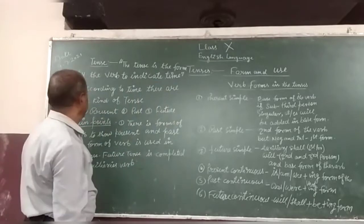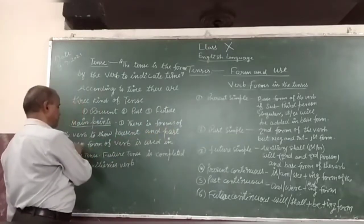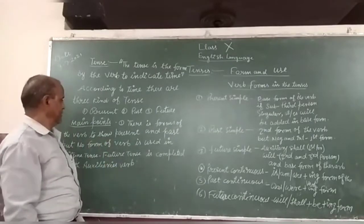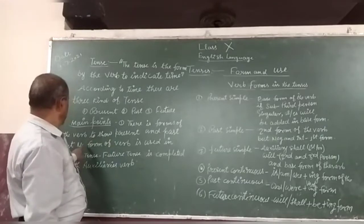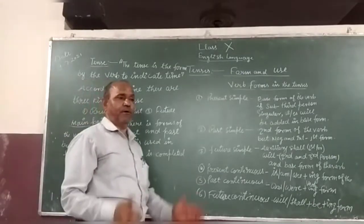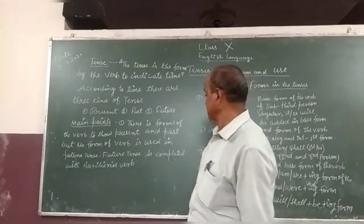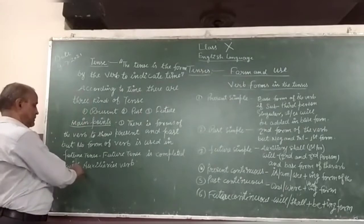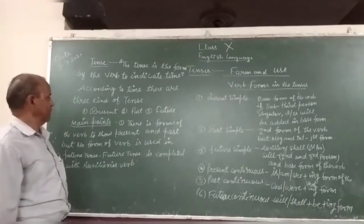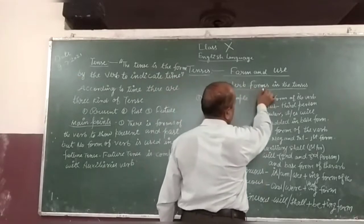Main point of the tense: there is a form of the verb to show present and past but no form of the verb is used in future tense. Future tense is completed with the auxiliary verb. Present and past tense is used by the form of the verb.